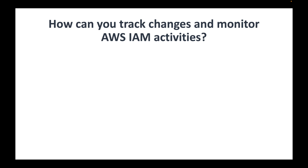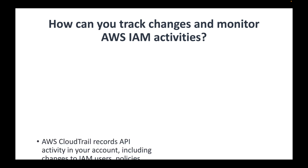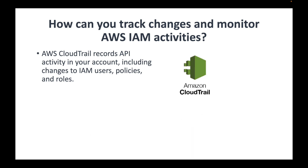The next question is: how can you track changes and monitor AWS IAM activity? To track any changes made to IAM users, policies, and roles, we can use AWS CloudTrail, which is the auditing service in AWS. CloudTrail records API activities within the AWS account, such as updating an IAM user, creating a new user, creating a new policy, or creating a new role.